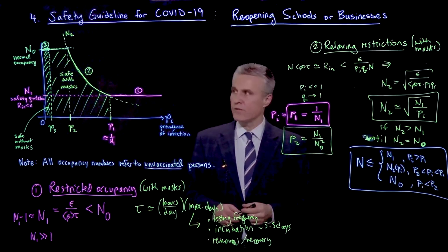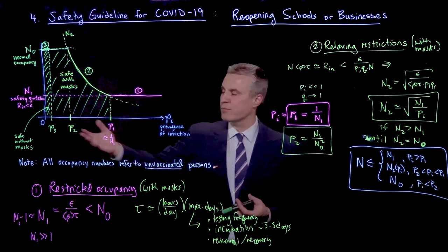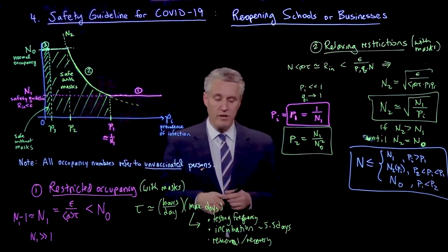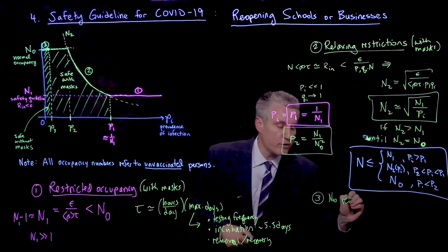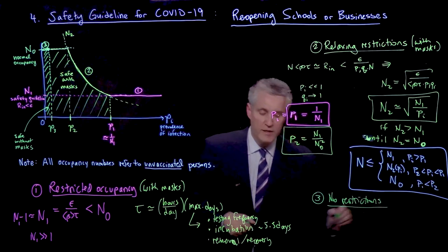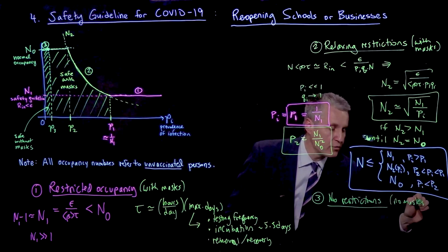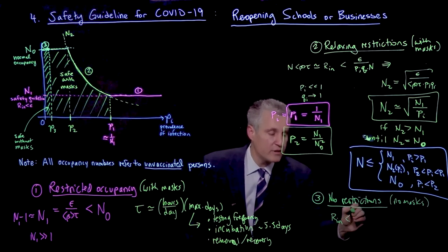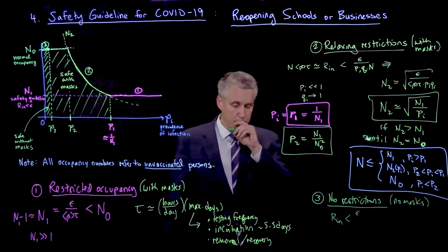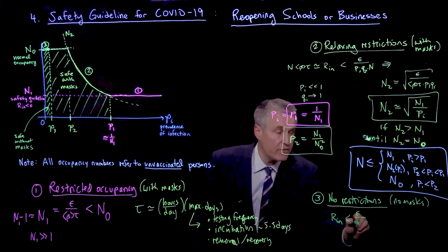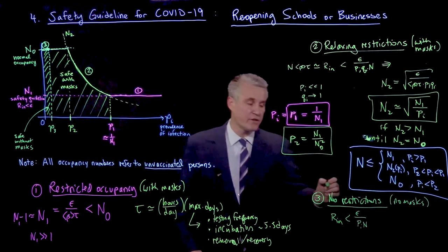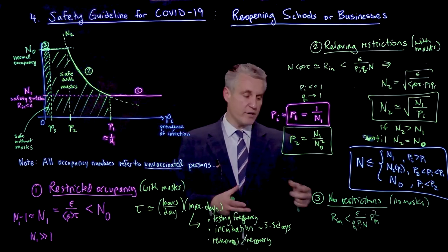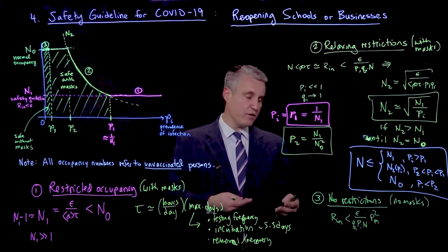And then the final decision to make is when do we return completely normal and take away certain restrictions we've imposed. So here I mentioned masks. We could also include in this calculation relaxing other restrictions, such as maybe not having the ventilation on quite so high. So that would be when we finally go back to no restrictions of any kind. We're sort of back to normal. So this means no masks, no other precautions, full occupancy. So in this case, we need rn is going to be less than epsilon over, well, let's see here. It's the same as before. We have this pi n that we just looked at, or technically times qi. But now we have another factor, pm squared.